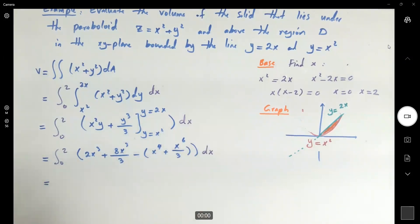So this guy is equal to, let's try to simplify this a little bit if we can. Integral 0 to 2, 14x cubed divided by 3 minus x to the 4 minus x to the 6 divided by 3, then dx.